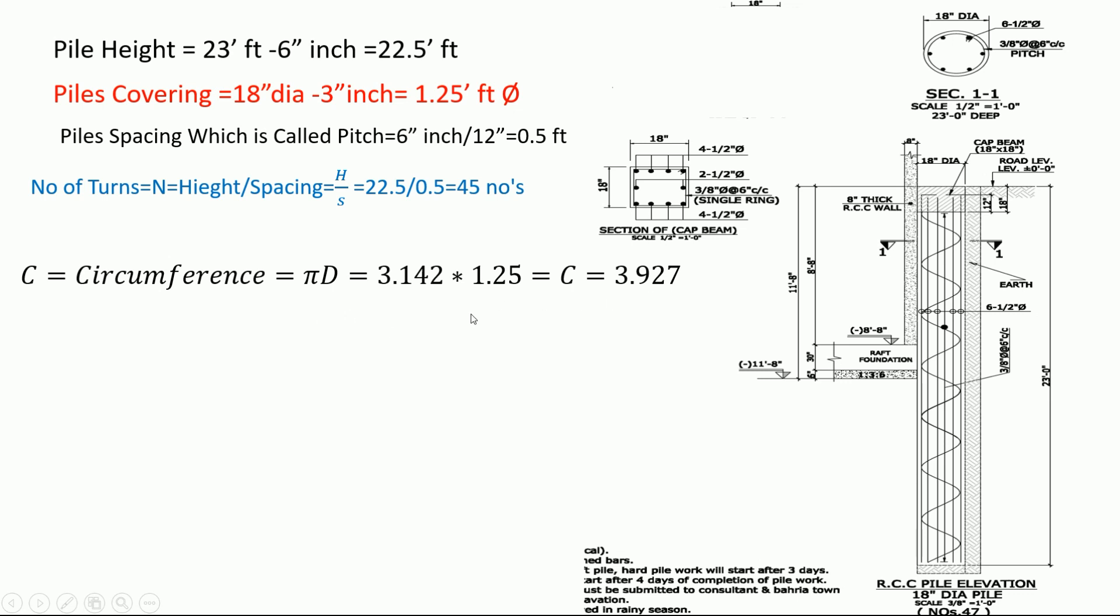Now we have spiral length calculation. Here is the formula: L equals N times the square root of C squared plus P squared, where N is the number of turns, C is the circumference, and P is the spacing or pitch. L equals 45 times the square root of 3.927 squared plus 0.5 squared, which equals 176.375. This formula is taken from Pythagorean theorem.